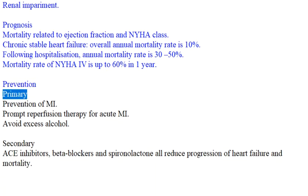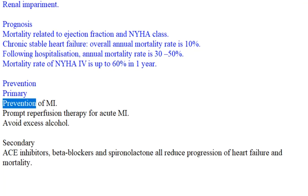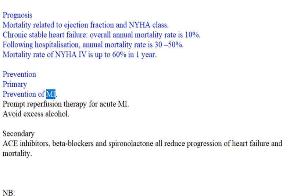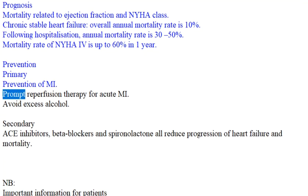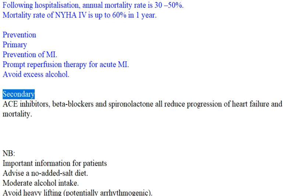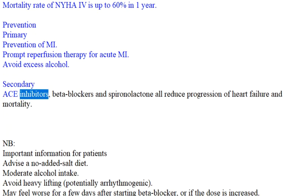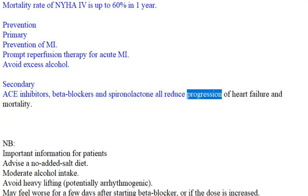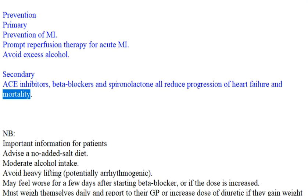Prevention: primary prevention of MI; prompt reperfusion therapy for acute MI; avoid excess alcohol. Secondary prevention: ACE inhibitors, beta blockers, and spironolactone all reduce progression of heart failure and mortality.